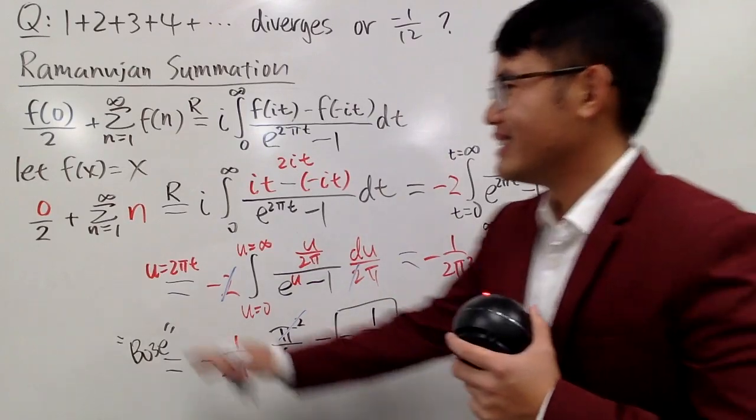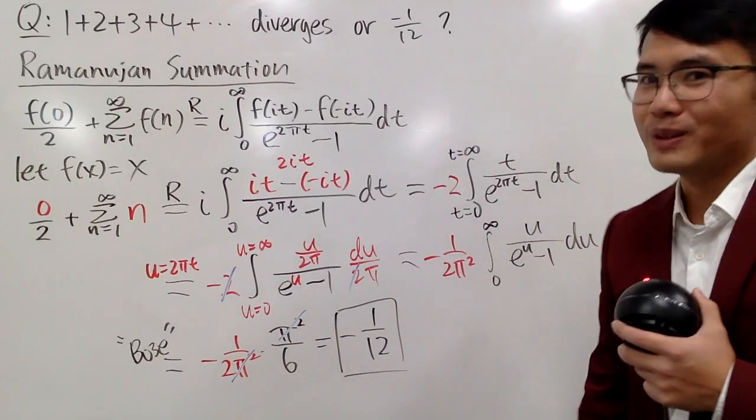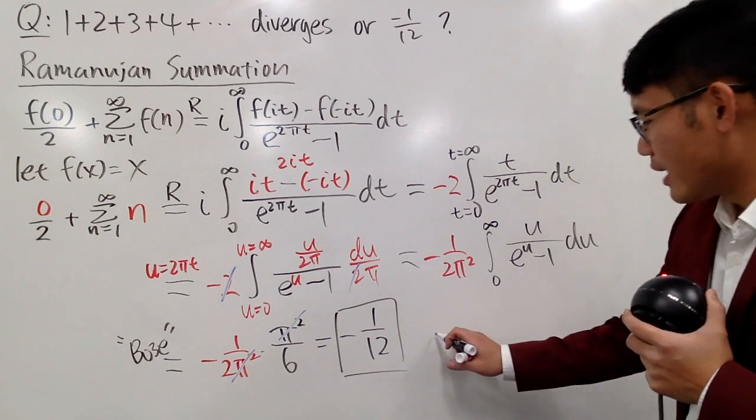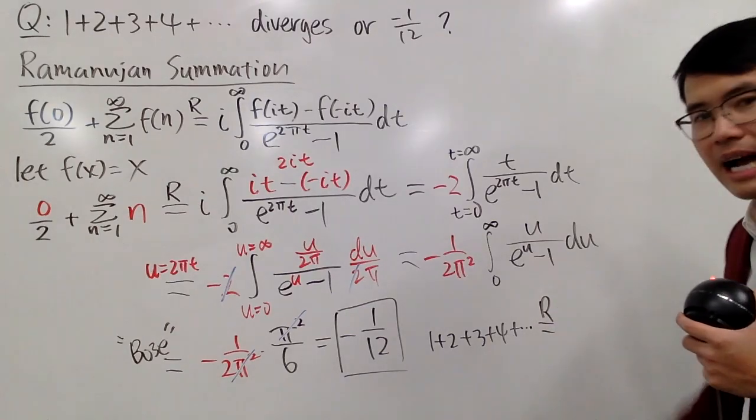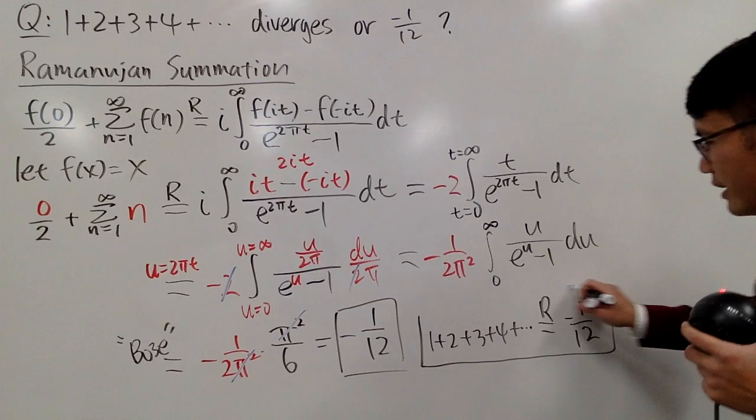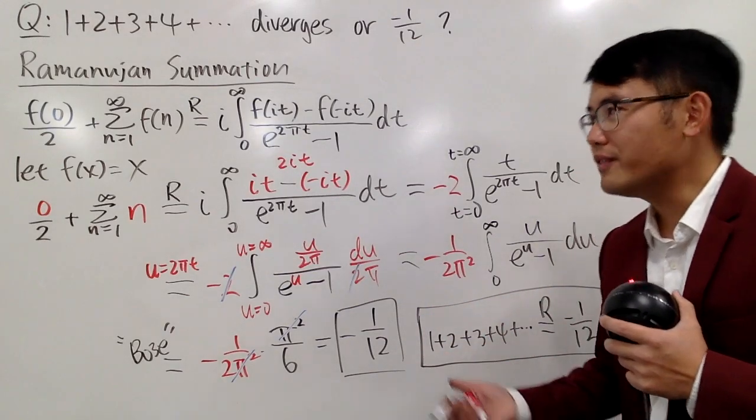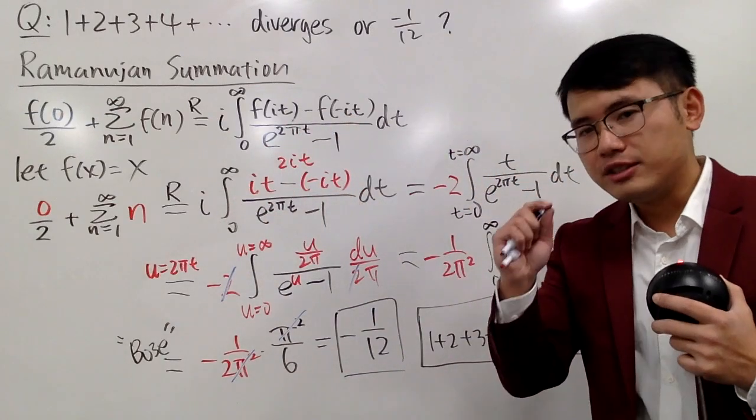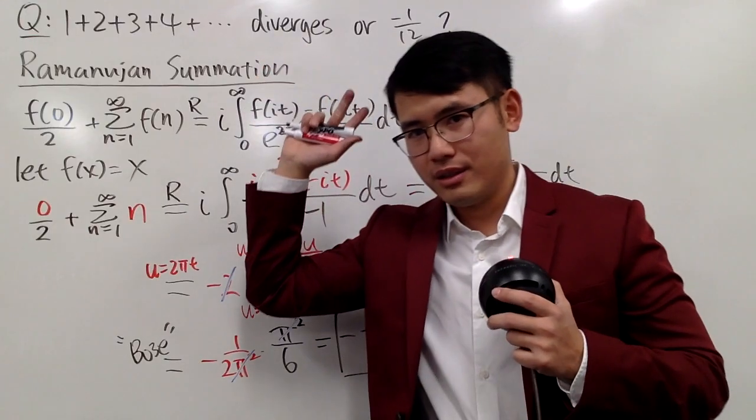So, in another word, this, thanks to Ramanujan, we end up with negative 1 over 12. So, the conclusion based on this is that I will actually write down 1 plus 2 plus 3 plus 4 plus dot dot dot. Put R on the top, and then you have the negative 1 over 12. This is perhaps the conclusion that you want to say. So, if you want to say this is negative 1 over 12, you can say because of Ramanujan. This is just a way to assign values to divergent series.